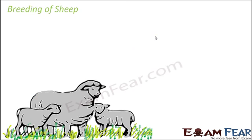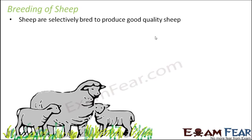The next thing that needs to be taken care of is the breeding of sheep. When we talk about breeding, we talk about good quality sheep which need to be mated so that the new sheep produced are also of good quality. Sheep are selectively bred to produce good quality offspring. Selective breeding means we choose good quality sheep and allow them to mate with each other so that the offsprings produced are also of good quality.